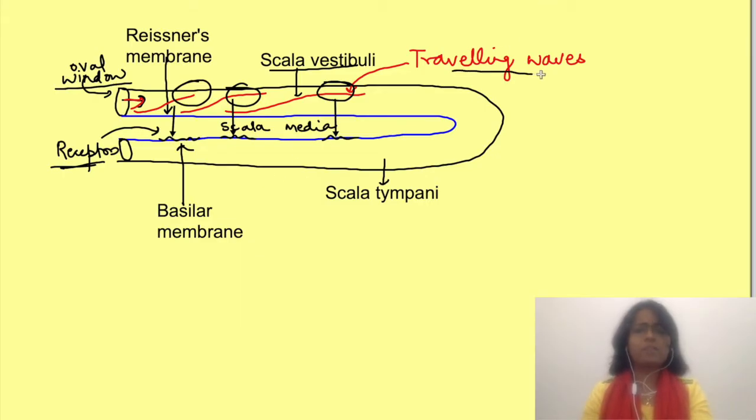These traveling waves reach a maximum height at a particular place in cochlea depending on the frequency of the pressure wave and then they wane off. High frequency sounds reach the peak near the base of the cochlea, while low frequency sounds reach their peak near the apex of cochlea.